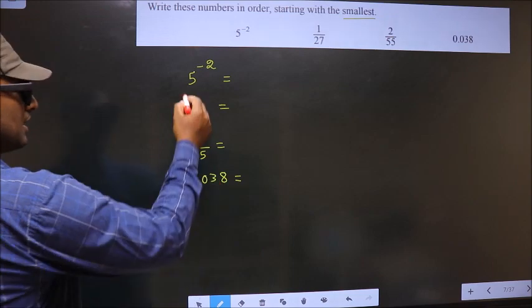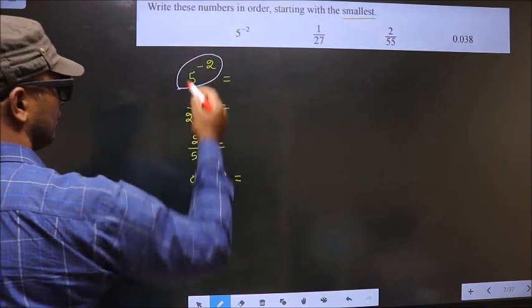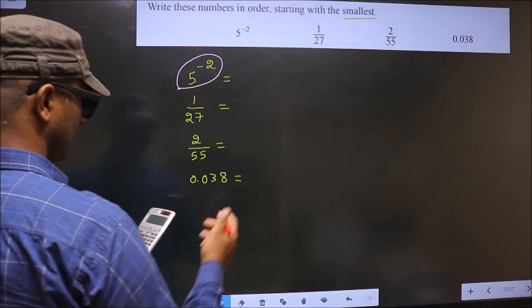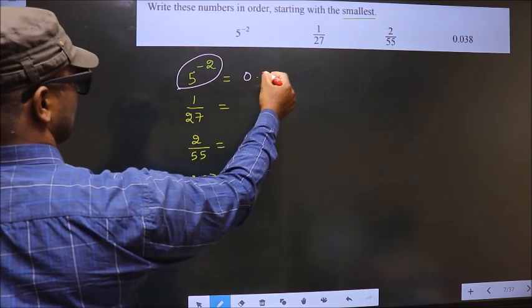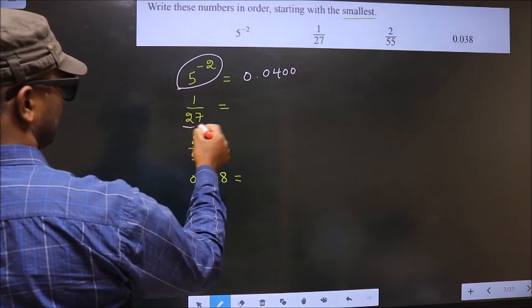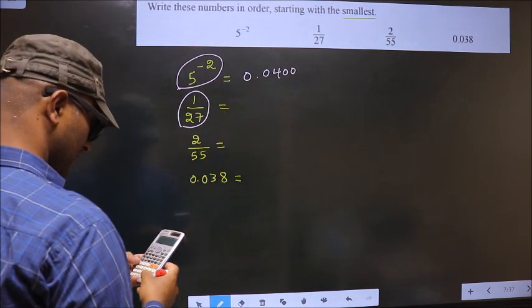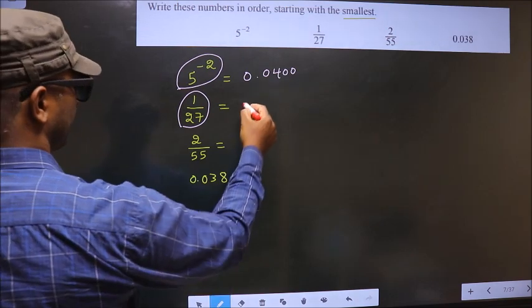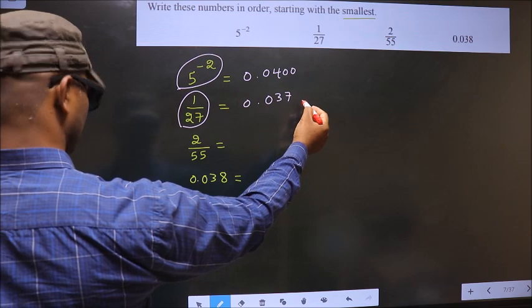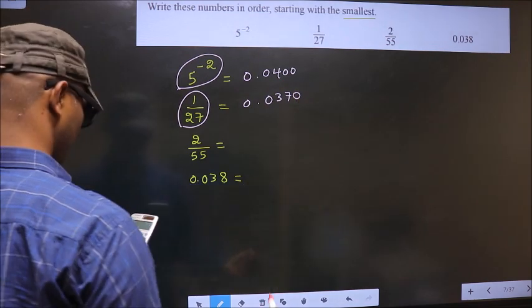Now you put this in the calculator, you get 0.04. Now you put this in the calculator, you get 0.0370.